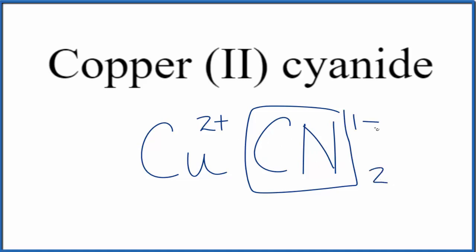If we put a 2 here, 2 times 1 minus, that's 2 minus, that would balance out the 2 plus. We do need to replace this here with parentheses though.